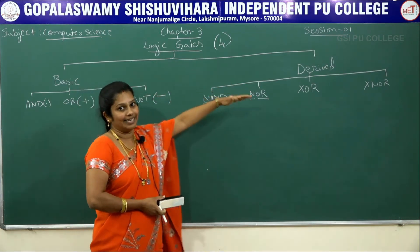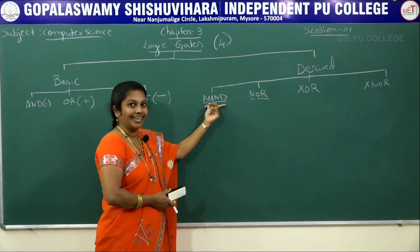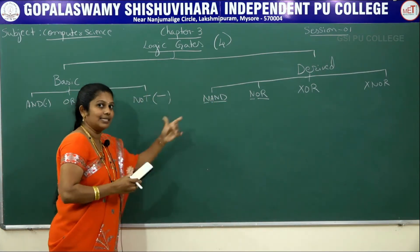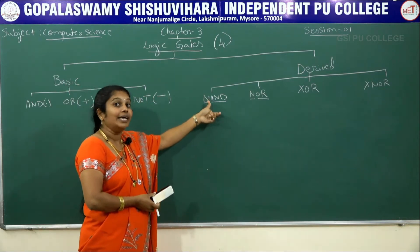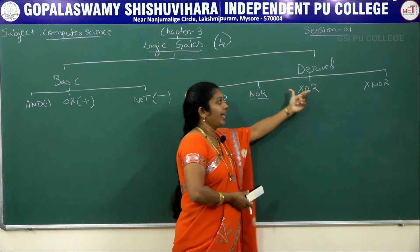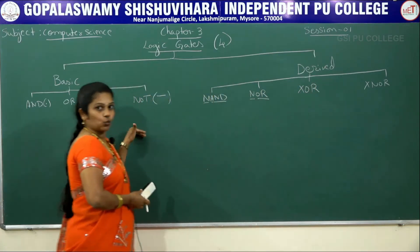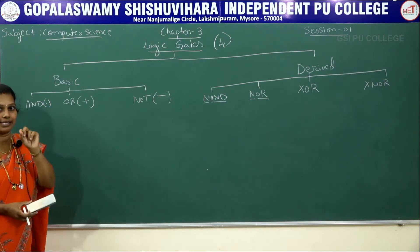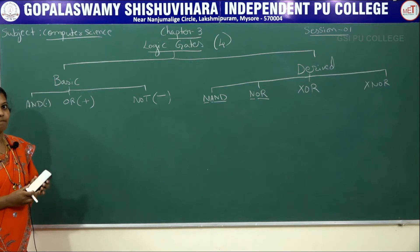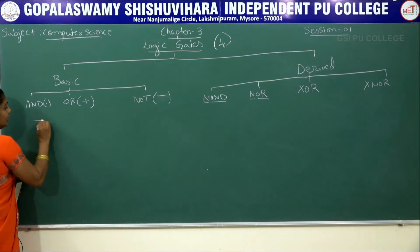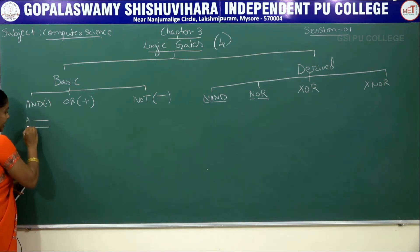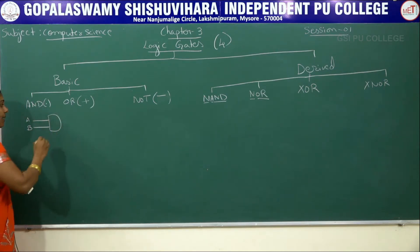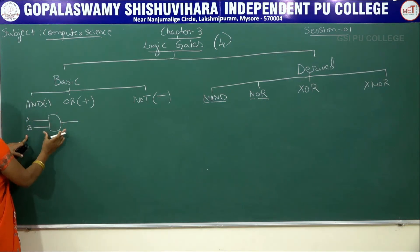Derived gates are basically derived from basic gates — they take the help of basic gates, that is why they are called derived gates. For example, NAND gate is derived from NOT gate and AND gate. Now for the AND gate, the symbol uses a D-shape. Minimum two inputs are required — for example A and B — and the output is represented with the D-shape and a single output line.